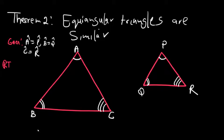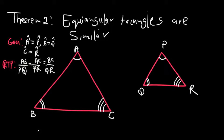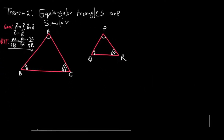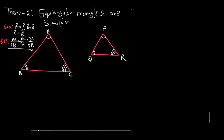You're required to prove that AB over PQ equals AC over PR equals BC over QR. Please keep that in mind. Now let's prove this — it should be fun. The first thing we're going to do is write down the proof.